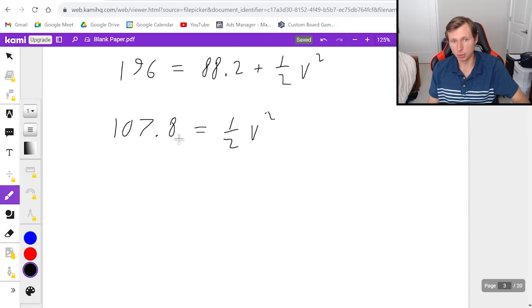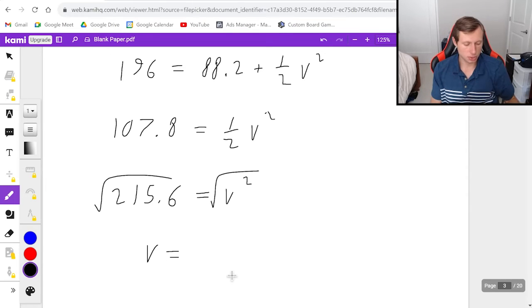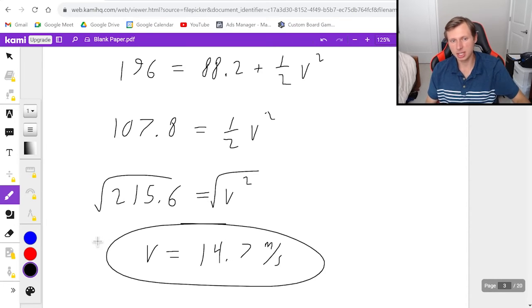Subtract 88.2 from both sides, and I'll get 107.8 equals 1 half V squared. Instead of dividing by 1 half, it makes way more sense to multiply 2 on both sides. So that's going to be 215.6 equals V squared. And then I got to take the square root of this, and that'll be my answer. So the square root of 215.6 gives me 14.7. And that is the speed in meters per second, 14.7. And so that's it for the second problem.